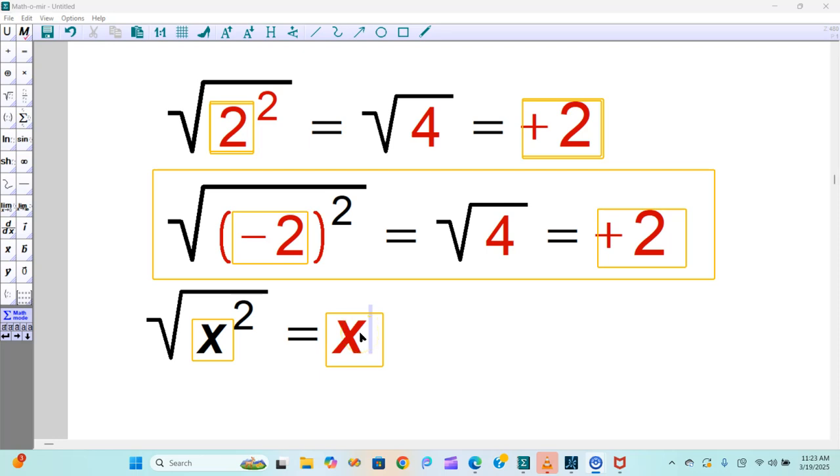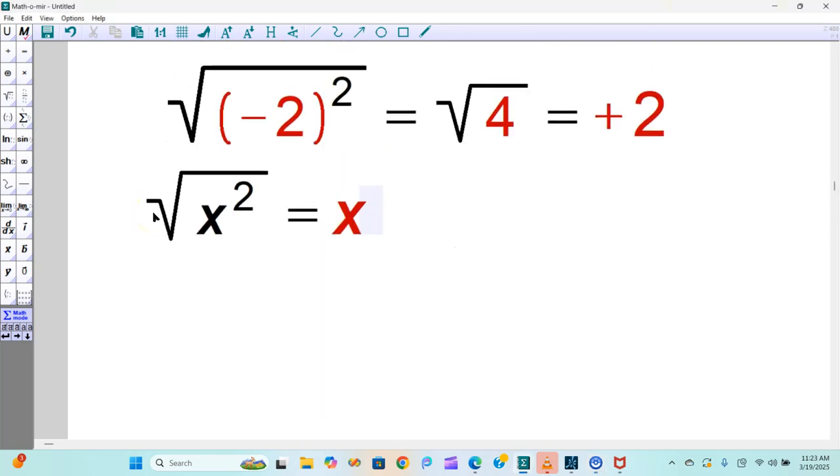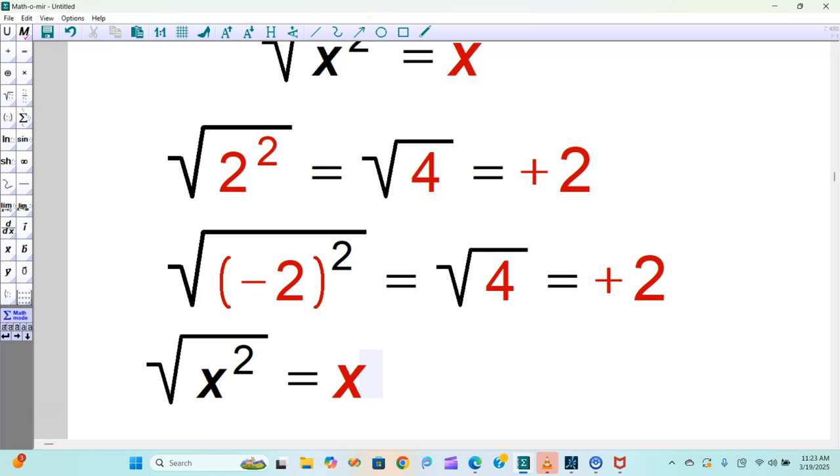This is x. Does it always come out to just be x? No, it doesn't. So how can we think about it better? Well, look at it again from different perspectives. This is positive, comes out positive. This is negative, this comes out positive. What is something that is always positive or zero, maybe? Absolute value. That is what is always zero or a positive number.